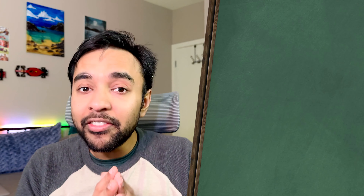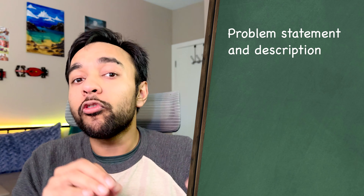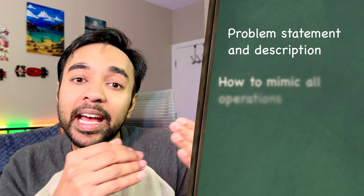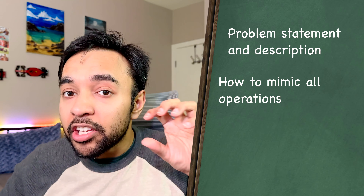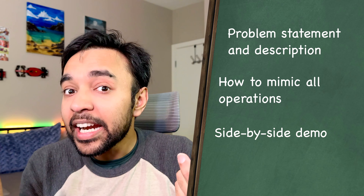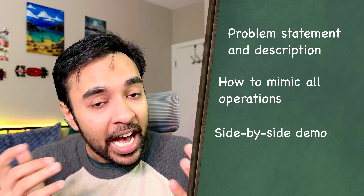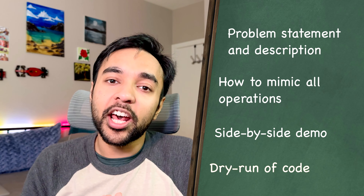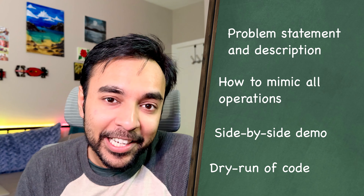Hello friends, welcome back to my channel. First I will explain the problem statement and see what it means. We will understand what all functions you have to implement and then we are going to see how you perform all of these operations. We will do a side by side comparison of a queue and how we are achieving all of the same operations using a stack. After that we will also do a dry run of the code so that you can visualize how all of this is actually working in action. Without further ado, let's get started.